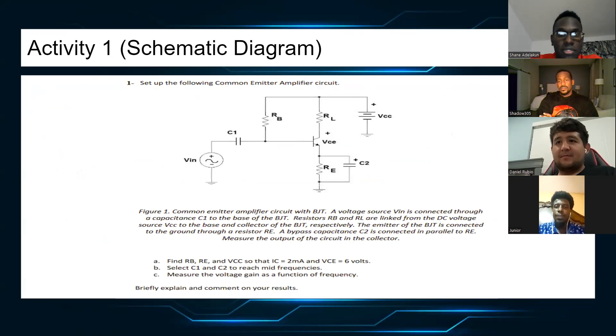This is activity one. This is going to be our diagram. As you can see, we have the circuit in front of us. It's a common emitter amplifier circuit with a BJT. A voltage source Vin is connected to the capacitance C1 to the base of the BJT. We're going to find the RB, the RE, the VCC, so that we could have IC equal to 2mA and VC equal to 6 volts. And we're going to find the mid frequencies and the voltage gain as a function of frequency.